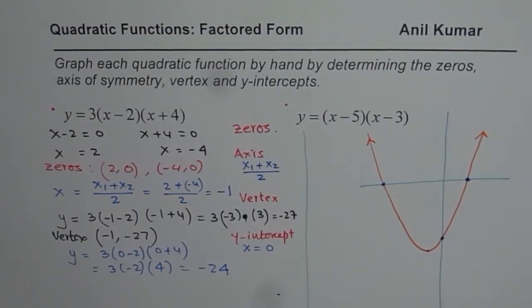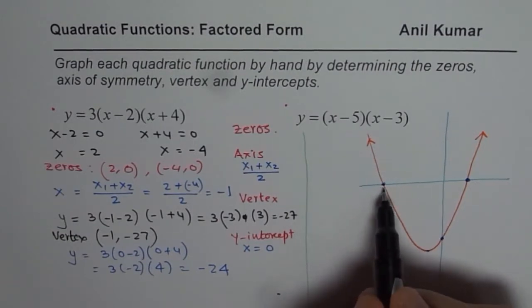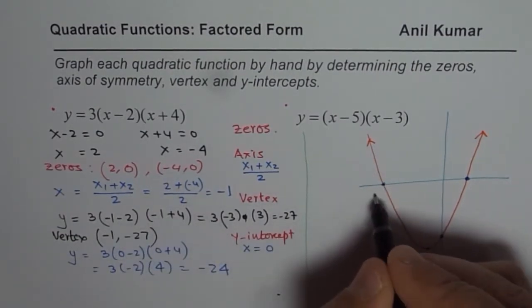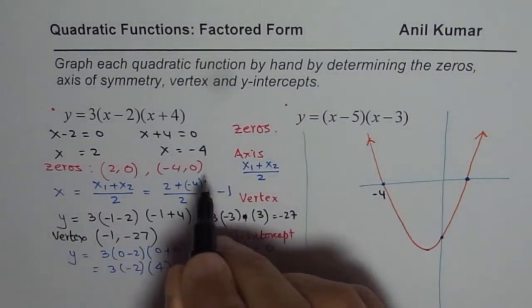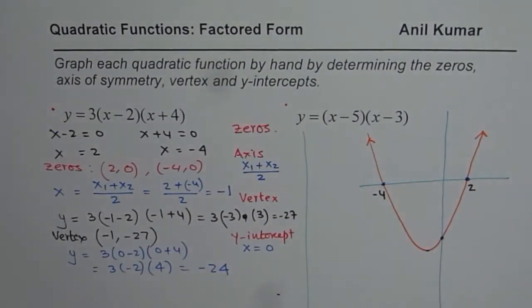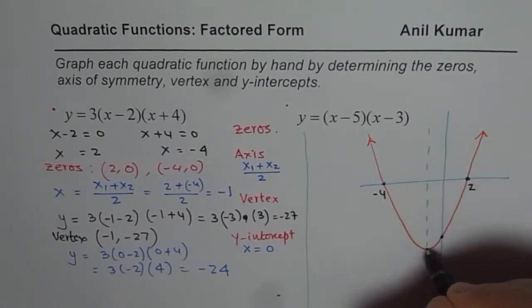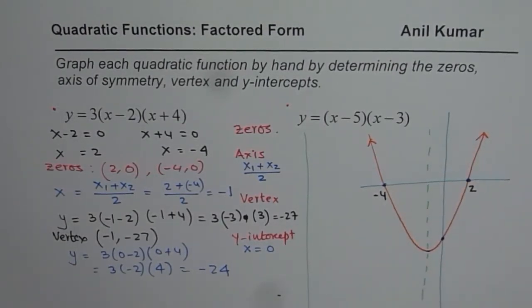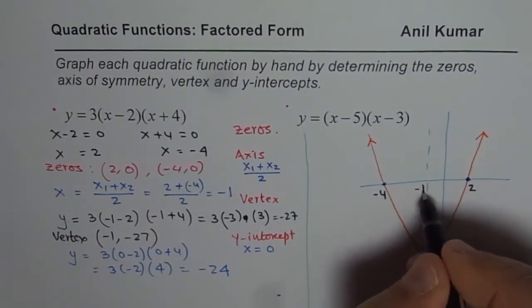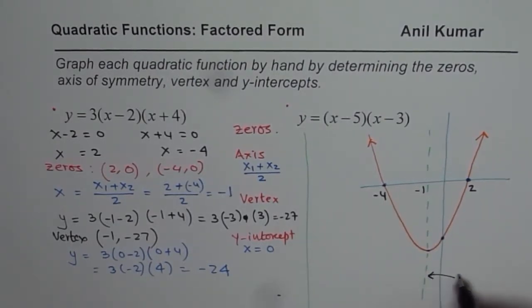These are my critical points. The first point here is the x-intercept at minus 4. First you write the x-intercepts minus 4 and 2, and then you sketch the axis. Your axis will be at minus 1. You would also write here x equals minus 1 is your axis of symmetry.